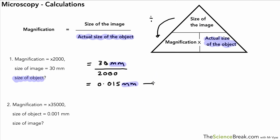We might be asked to convert that into micrometers. Converting to micrometers is just a case of multiplying by a thousand, so that would be 15 micrometers. So 0.015 millimeters is 15 micrometers.